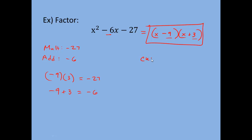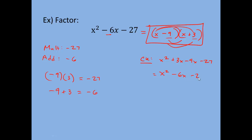To check, we can FOIL: x times x gives x squared; x times positive 3 gives plus 3x; negative 9 times x gives negative 9x; and negative 9 times positive 3 gives negative 27. Combining like terms, we get x squared minus 6x minus 27, which is the original expression, so it checks out. The answer is x minus 9 times x plus 3. The check is optional and just for you to verify your own work.